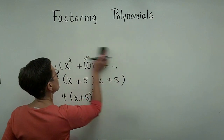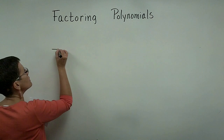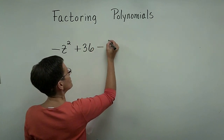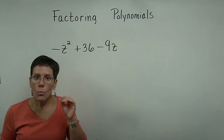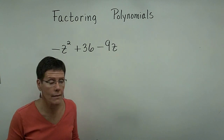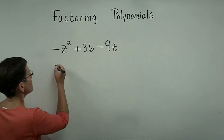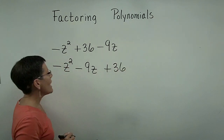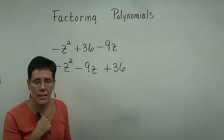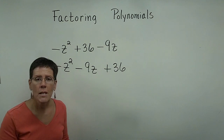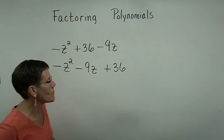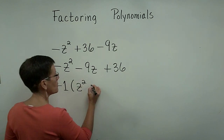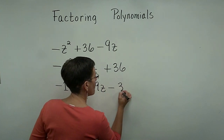Next, here's a problem that's out of order: the z² term has a negative sign in front, then a constant, then the z-first-power term. Before factoring, put it in descending order: -z² - 9z + 36. I really dislike negative signs in front of the squared term, so I'll factor out a negative one. That makes the squared term positive: -1(z² + 9z - 36). Now it's much easier to find two numbers whose product and sum match.